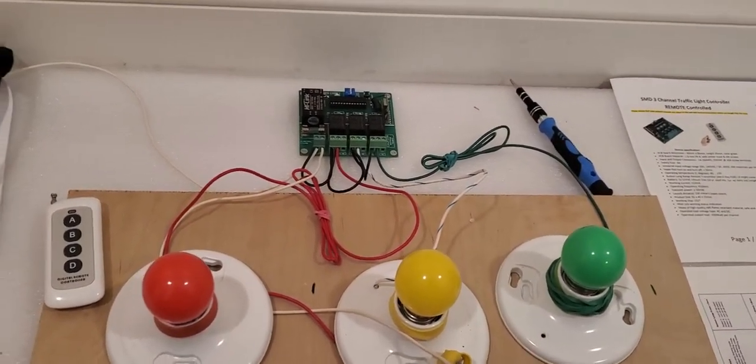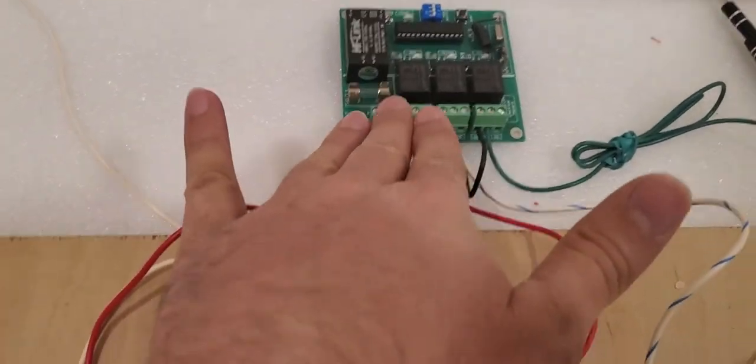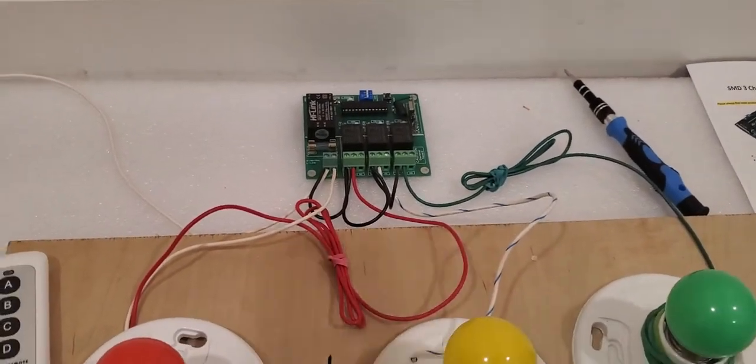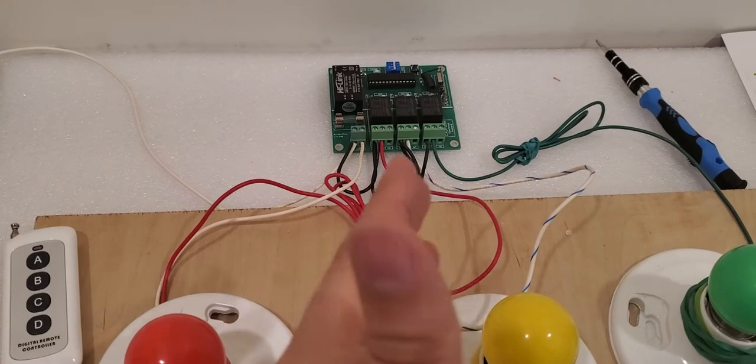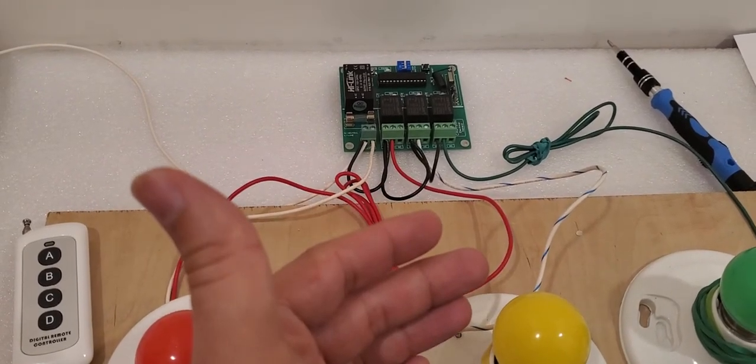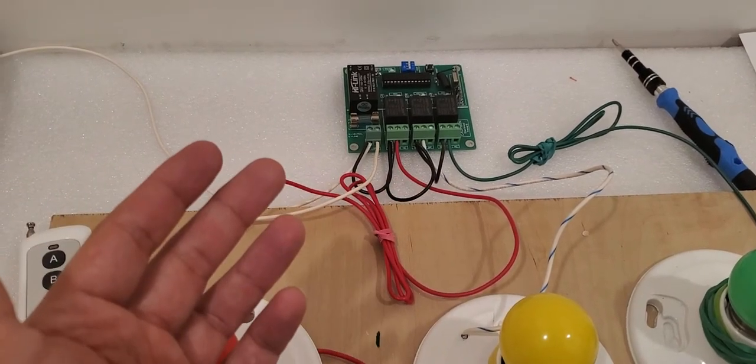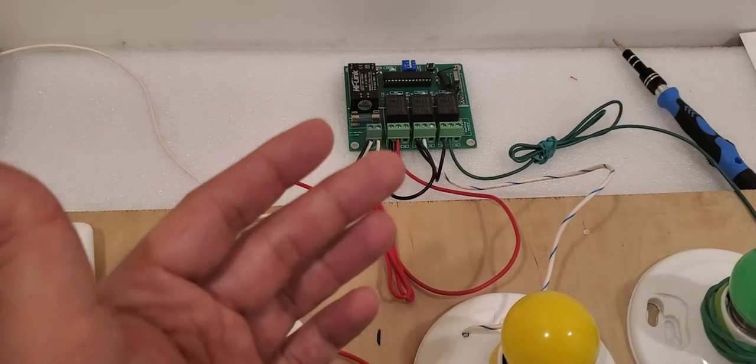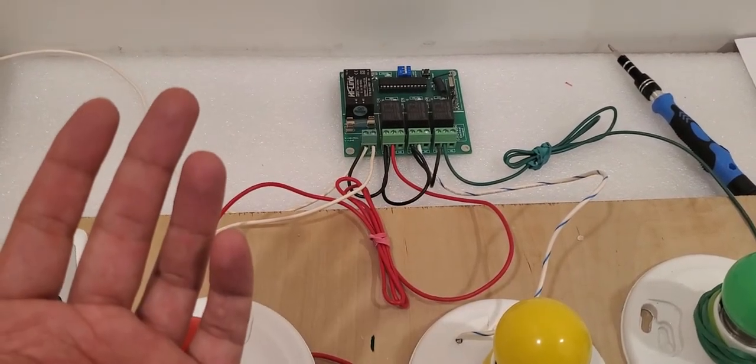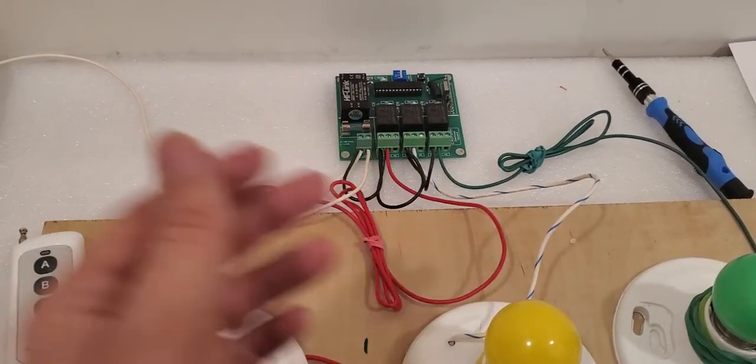Let's talk about the first one which is specifications. This device is working with AC and DC voltages. For the AC the range is between 100 to 240 voltages and it doesn't matter the hertz. It can work with 50 or 60 hertz. It is going to automatically detect voltage and hertz itself, you don't have to do anything.